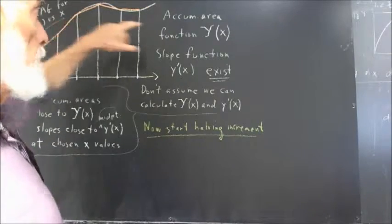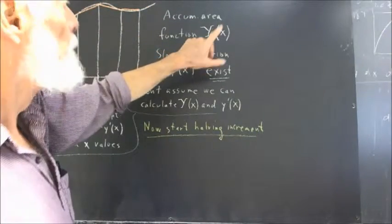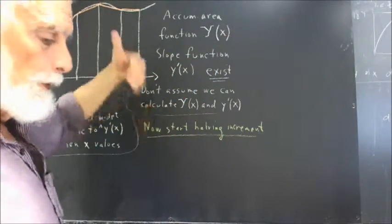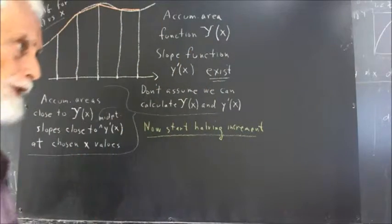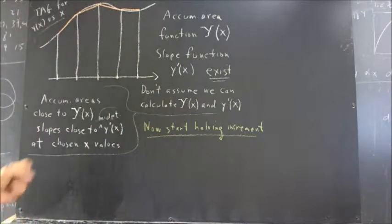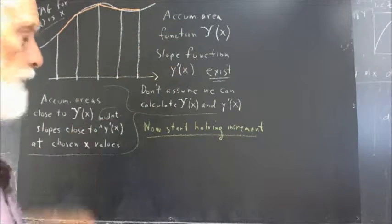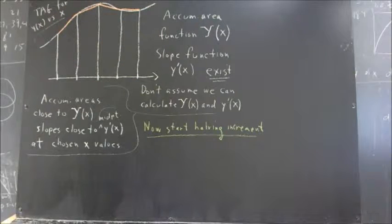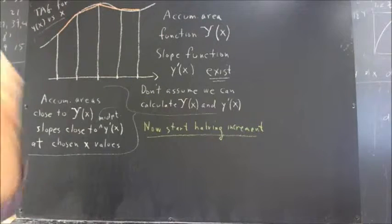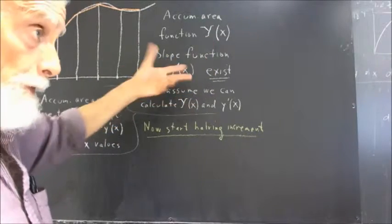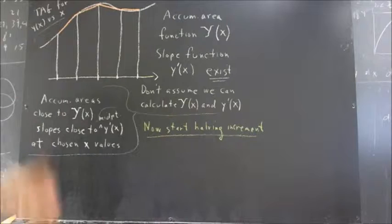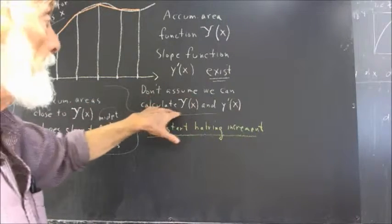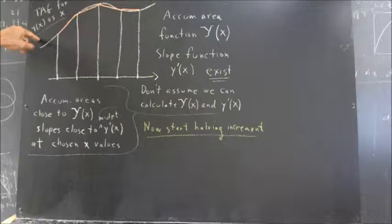It doesn't mean it doesn't exist. It doesn't mean it doesn't model something important. If we don't have a formula for the function, chances are we're not going to be able to calculate the accumulated area function or the slope function as we did with the example of y equals x cubed plus 5. So there's no reason to suppose that any of this can be calculated. Still, we're going to be able to prove that these functions have certain properties connected by what we call the fundamental theorem of calculus.